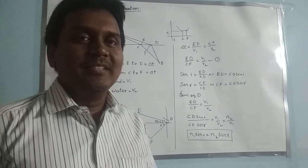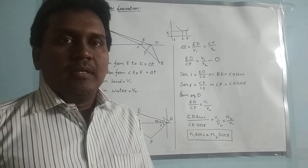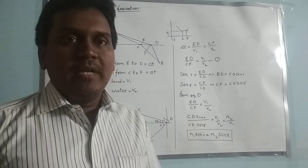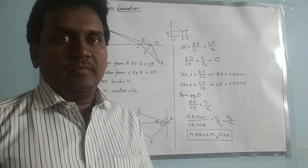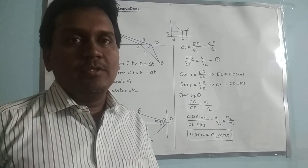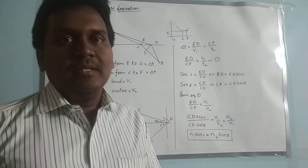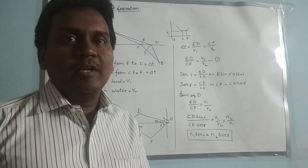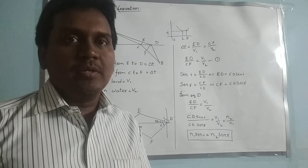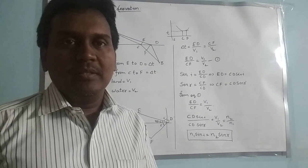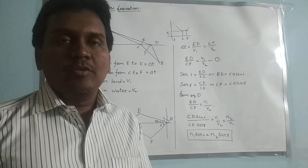In this video, we are going to learn about laws of refraction. There are two laws of refraction. The first law is Snell's law. In Snell's law, it states that the ratio of sine of angle of incidence and sine of angle of refraction is constant. That means, simply, we can write it as sine i by sine r is constant.